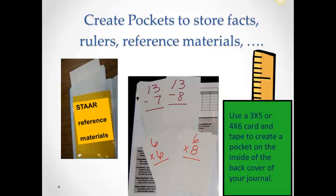Pockets can be created on the inside back cover for materials that will be reused frequently such as flashcards for facts, rulers, and reference materials such as formula charts. They can also be used throughout the journal as needed for specific activities. Pockets can be created using recycled envelopes, baggies, index cards, cardstock, clasp envelopes, and paper or plastic CD cases.